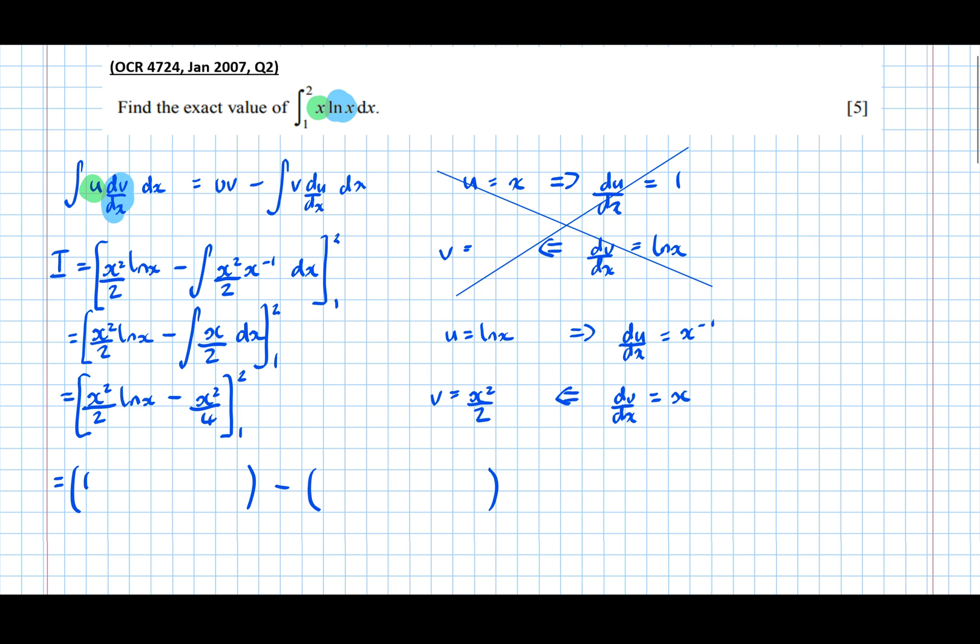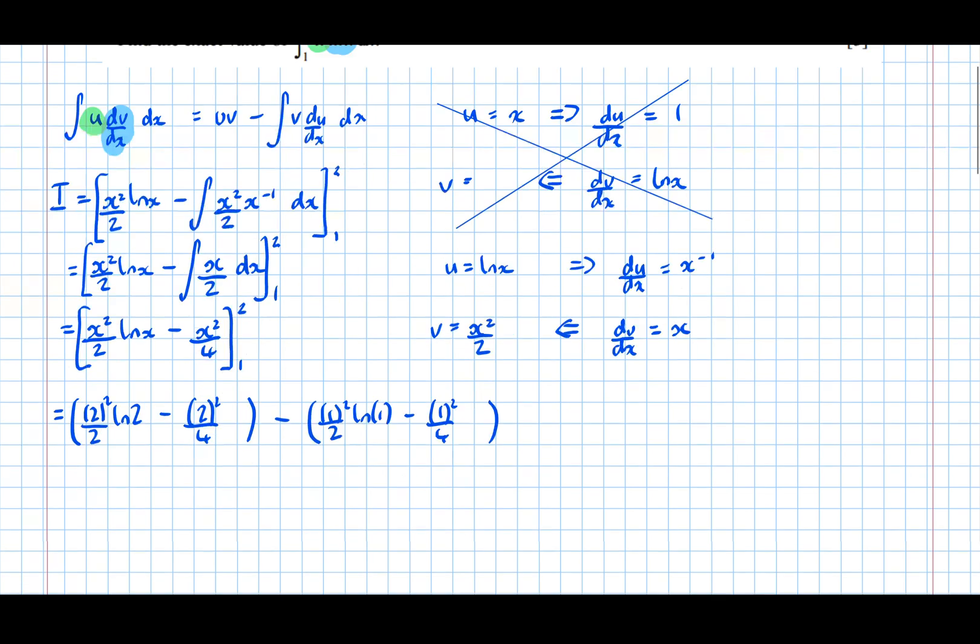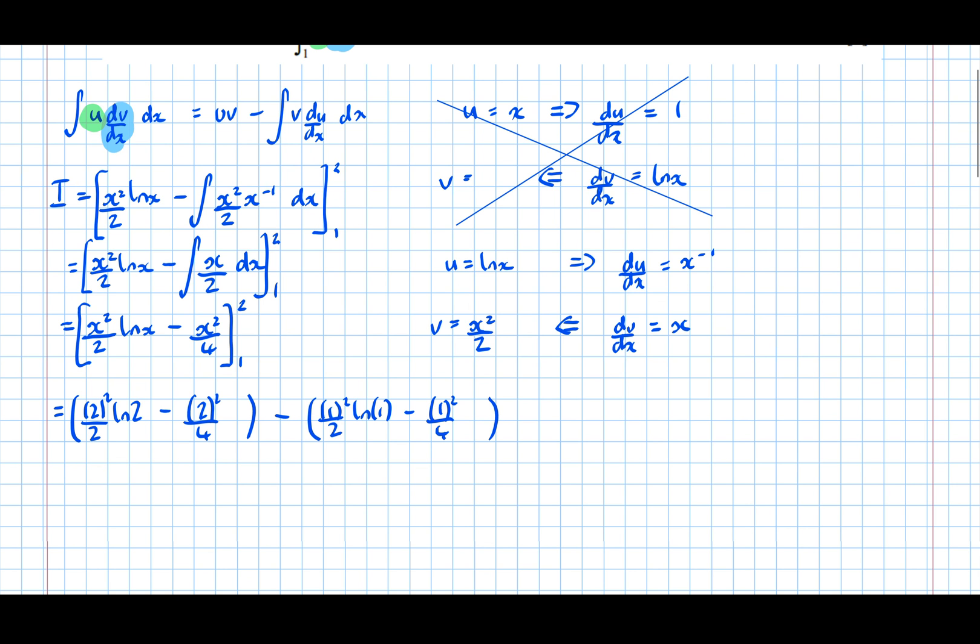So 2 squared over 2 log 2 minus 2 squared over 4, minus 1 squared over 2 log of 1 minus 1 squared over 4. And that line there is worth a mark in the event of a wrong answer.